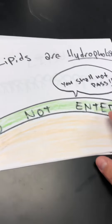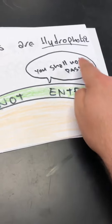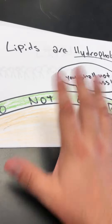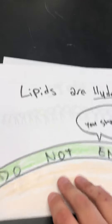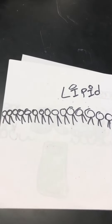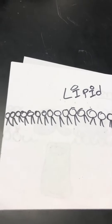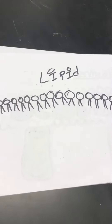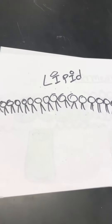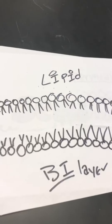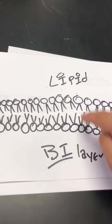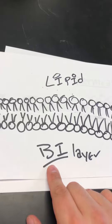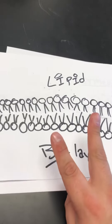Lipids are hydrophobic, which means they do not let water inside of the cell unless the cell needs that water. We call this structure found inside of cell membranes a lipid bilayer. There are two layers of lipids — bi means two.